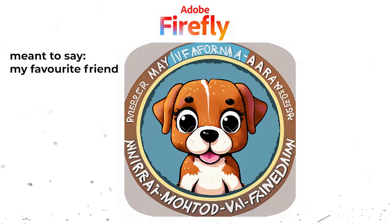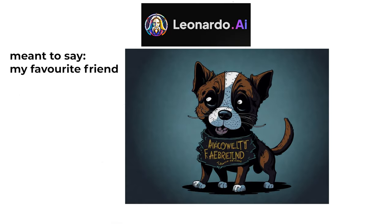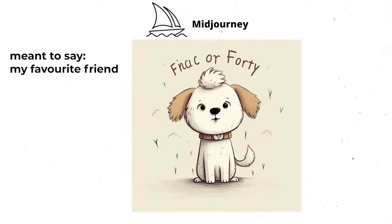Up until this point, AI graphics and text didn't really go well together. Every tool was producing these mumbled jumbled results that made absolutely no sense. We couldn't use them — they were silly and they made no sense. Well, that's now changed.